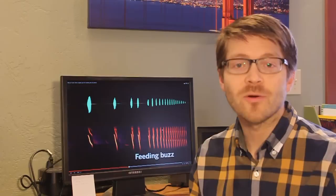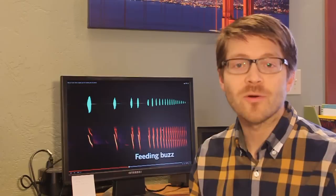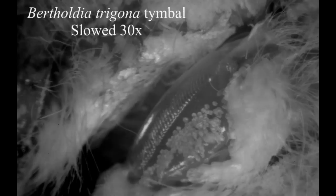The moth Bertholdia trigona is the only animal known to jam bat echolocation, and it does so by producing clicks at up to 4,500 clicks per second.